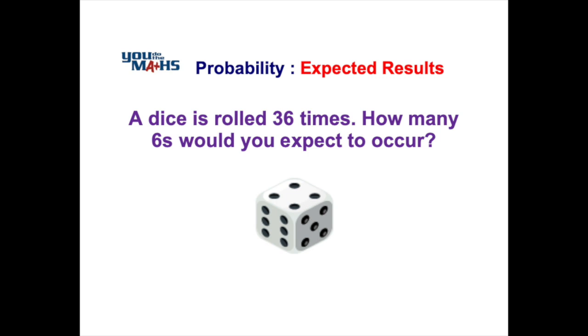We can use probability to determine how many times some event is likely to occur. Using the example shown here on the screen, we can actually work out how many sixes we'd expect to get if we rolled a dice 36 times.